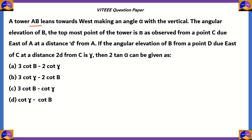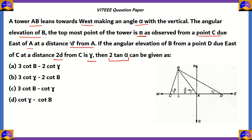Now let's look at the next question. A tower AB leans towards the west making an angle of alpha with the vertical. The angular elevation of the topmost point is an angle beta as observed from a point C due east of A at a distance d from A. If the angular elevation of B from the point D due east of C at a distance 2d from C is gamma, then we need to find the value of 2 tan alpha. So this is a sample diagram. AB represents the tower, and angle beta is the angle subtended by segment CB with C. The angle gamma is known as angle ADB.